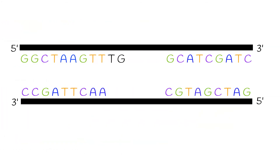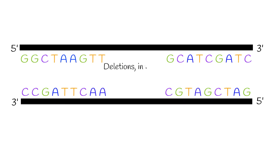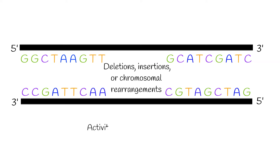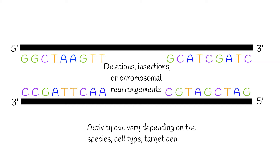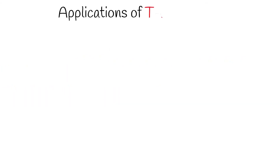The double-stranded break can be resolved by non-homologous end joining. However, this can also lead to deletions, insertions, or chromosomal rearrangements. Activity varies depending on the species, cell type, target gene, and nuclease used. So why use TALENs?